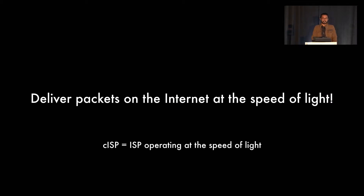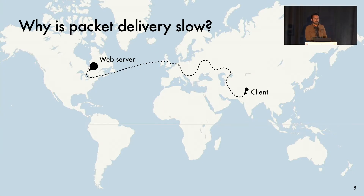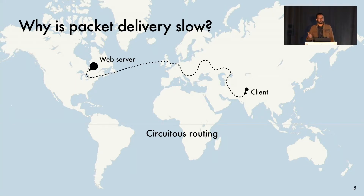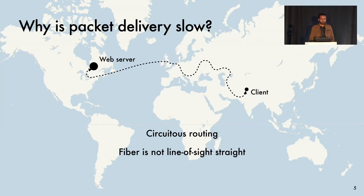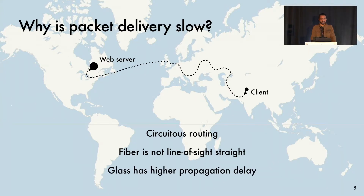To do that, we design an internet service provider that operates at nearly the speed of light, which we call CISP. Why is packet delivery in the internet so slow? The main reasons are that routing in the internet is circuitous. Packets don't always go from A to B — they are first routed to C, which often makes the path much longer. Even when packets are routed optimally, fiber is not line of sight straight; it has to follow the terrain. And lastly, the speed of light in glass is just lower than it is in vacuum or air — that basic fact accounts for 1.5x inflation.